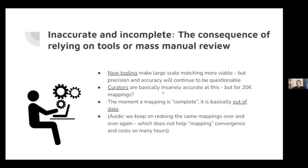Even if you've managed to get a nice mapping out, it's basically out of date the moment you publish it, because the ontologies involved are evolving and new terms are being added. You need to think about whether there are now better mappings given the new terms. And we have the problem of redoing the same mappings over and over — there have probably been thousands of projects mapping MedDRA to other terminologies. We need to think about how to effectively reuse other people's mappings rather than starting from scratch each time.